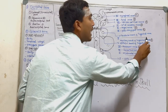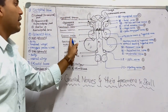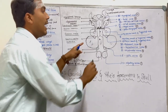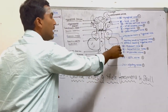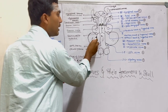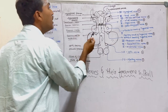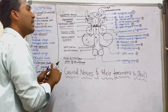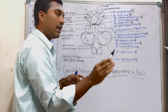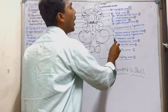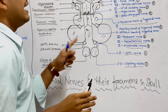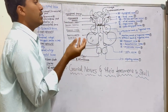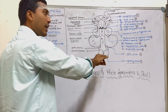The pre-sphenoid bone consists of a body and two large wings called orbital wings. The posterior border of the orbital wing and the anterior border of the temporal wing form a notch and foramen called the foramen orbitorotundum, through which four important nerves arise: the oculomotor nerve (CN III), trochlear nerve (CN IV), abducent nerve (CN VI), and the ophthalmic and maxillary branches of the trigeminal nerve.